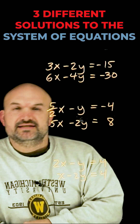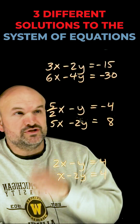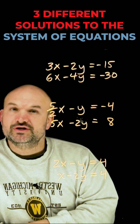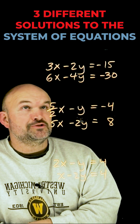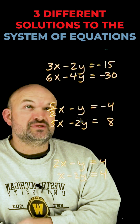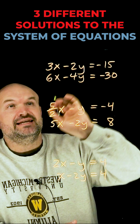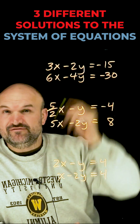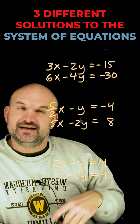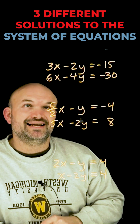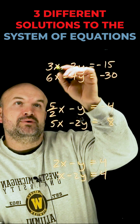Let's go and see which of these systems of equations is going to be one solution, no solution, or infinitely many solutions. To do that, I'm going to use the elimination method — getting the coefficient of the same variable, one to be positive and one to be negative, so I can add the two equations.